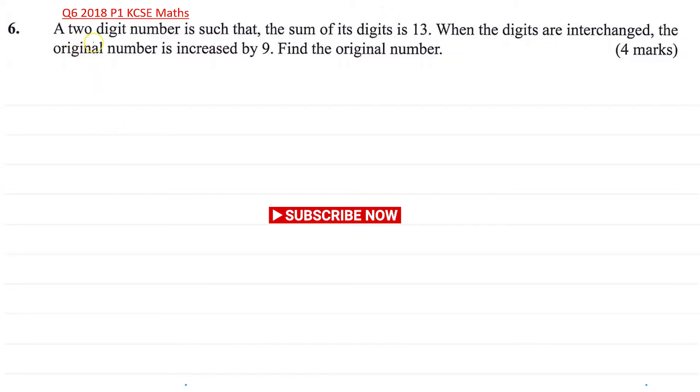So the question says a two-digit number is such that the sum of its digits is 13. When the digits are interchanged, the original number is increased by 9. Find the original number.